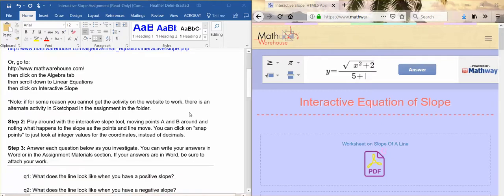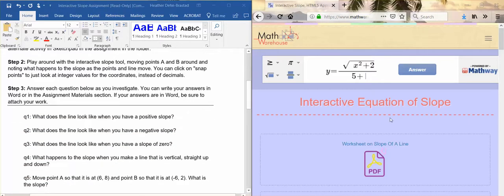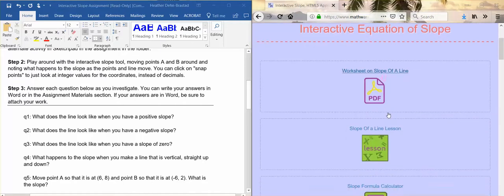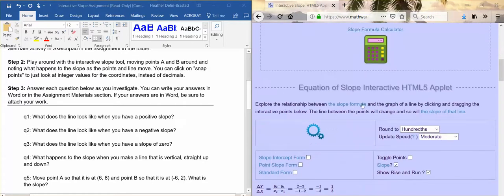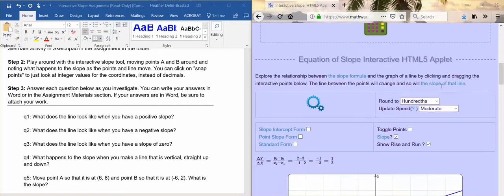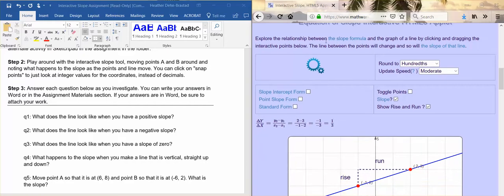Let's assume that you can get it to work. You have to scroll down here to get to the actual applet which is what we're going to be using. We're going to explore the relationship between the slope formula and the graph of a line by clicking and dragging the interactive points. The line between the points will change and so will the slope of that line. You can change some settings if you want to, this is set to hundredths, you could change it to tenths, and you can slow this down or speed it up if you want to.